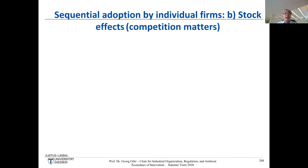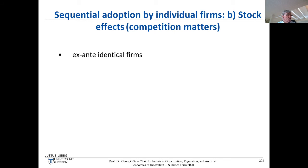There are two unsatisfying elements of the previous approach. First, competition doesn't matter — we only have monopolists. Consider what happens if Volkswagen and other car manufacturers adopt new technology like robots in assembly lines: that would adversely affect rivals' profits. So it's important to account for competition, which is done in so-called 'stock effects models.'